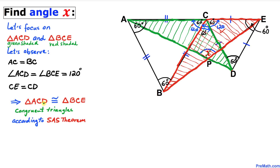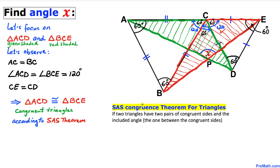Therefore we conclude that the two shaded triangles ACD and BCE are congruent according to the side-angle-side theorem. The SAS congruence theorem states: if two triangles have two pairs of congruent sides and the included angle, then the two triangles are congruent.